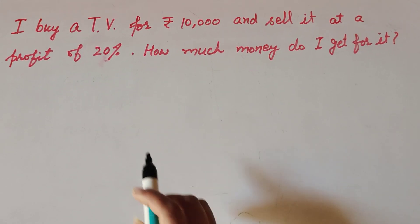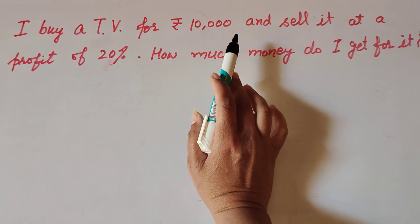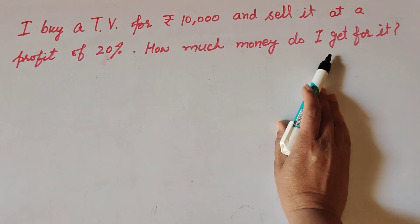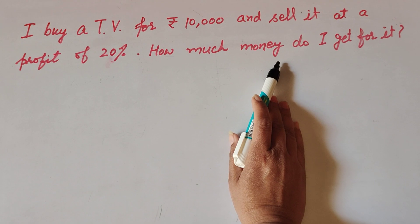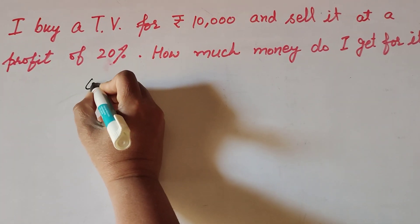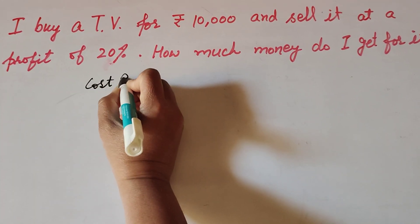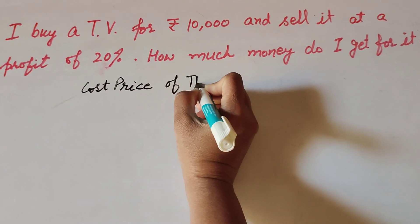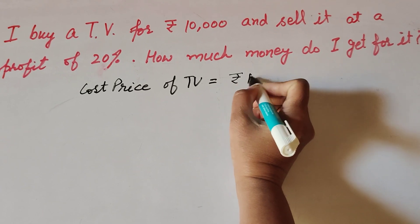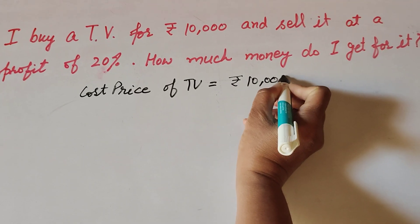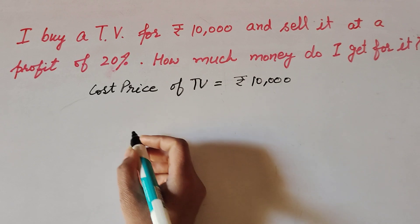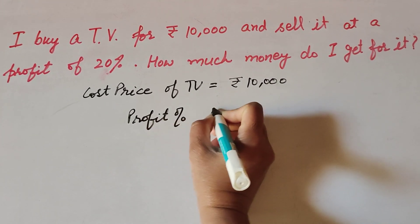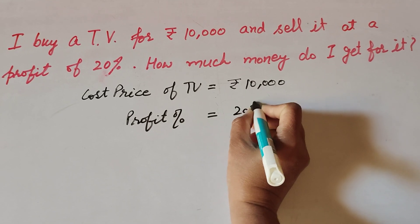Hello friends, welcome to my channel. In this video we discuss: I buy a TV for rupees 10,000 and sell it at a profit of 20 percent — how much money do I get for it? We find the selling price of the TV. The given information is: cost price of TV is equal to rupees 10,000, and profit percentage is equal to 20 percent.